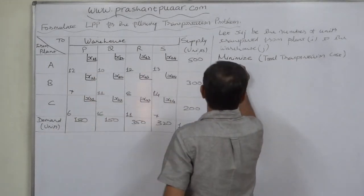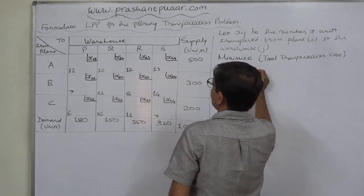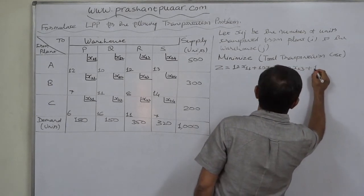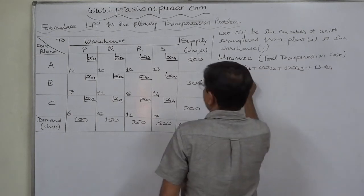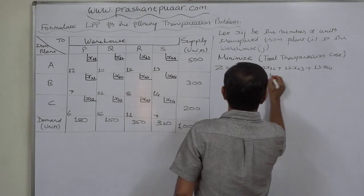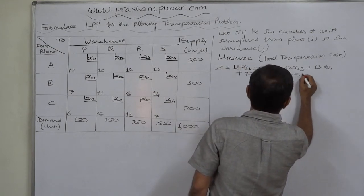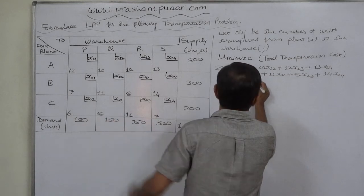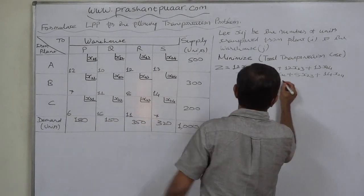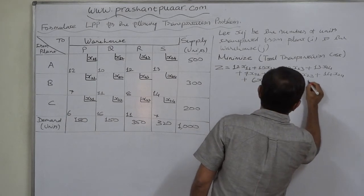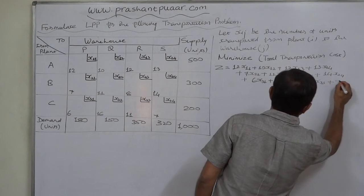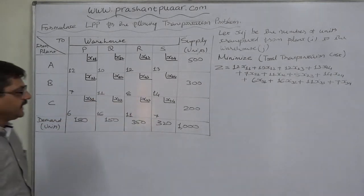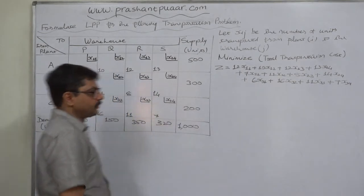The objective function is: minimize Z = 12x11 + 10x12 + 12x13 + 13x14 + 7x21 + 11x22 + 8x23 + 14x24 + 6x31 + 16x32 + 11x33 + 7x34. If we substitute the numerical values of these xij into this function, we will obtain the total transportation cost.